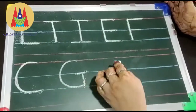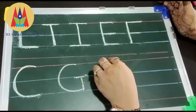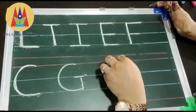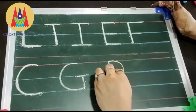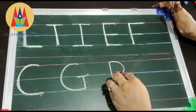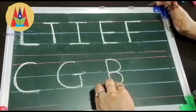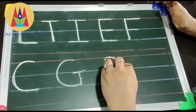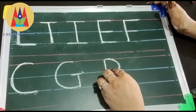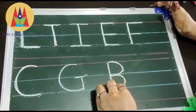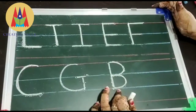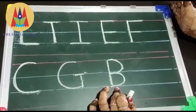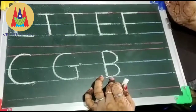Our next alphabet is letter B. Standing line red to blue, then small curve first red to blue and then blue to blue. Standing line, then red to blue, small curve and again blue to blue, small curve. This is letter B. B for bat, B for ball and B for batsman.